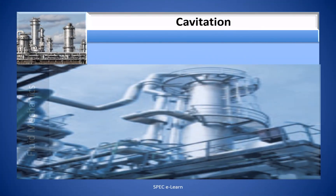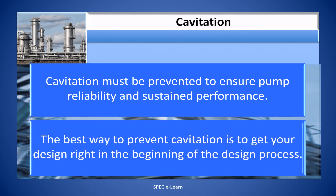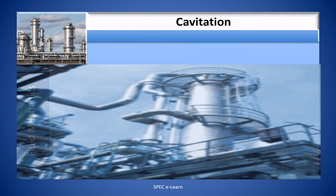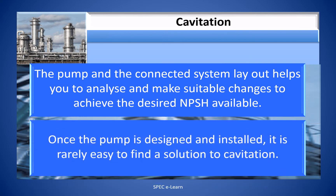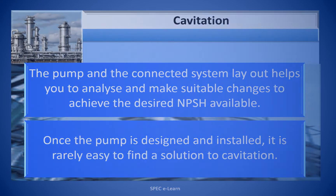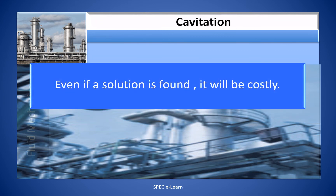The key takeaways from this discussion: cavitation must be prevented to ensure pump reliability and sustained performance. The best way to prevent cavitation is to get the design right at the beginning of the design process. The pump and the connected system layout help you analyze and make suitable changes to achieve the desired NPSH available. Once the pump is designed and installed, it is not easy to find a solution to cavitation, and even if a solution is found, it will be costly.